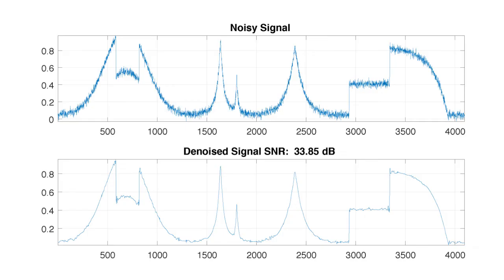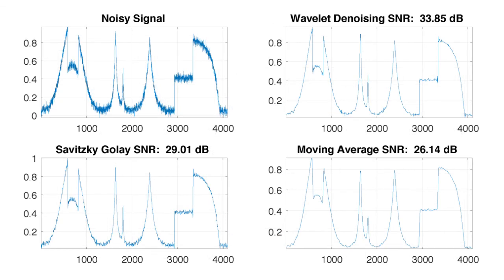Let us now use the plot command to compare the noisy signal with the denoised signal, which was the output of the previous step. Clearly, the denoised version has less noise. You can also compare the performance of the denoising technique we discussed earlier with other denoising techniques such as Savitzky-Golay filtering or the moving average technique. You can see that the wavelet denoising method outperforms other denoising techniques. In this way, the benefits of using wavelet techniques to denoise a signal are clear.